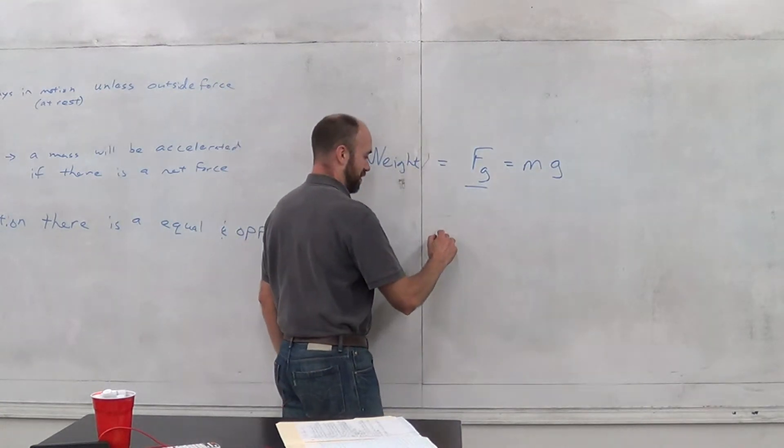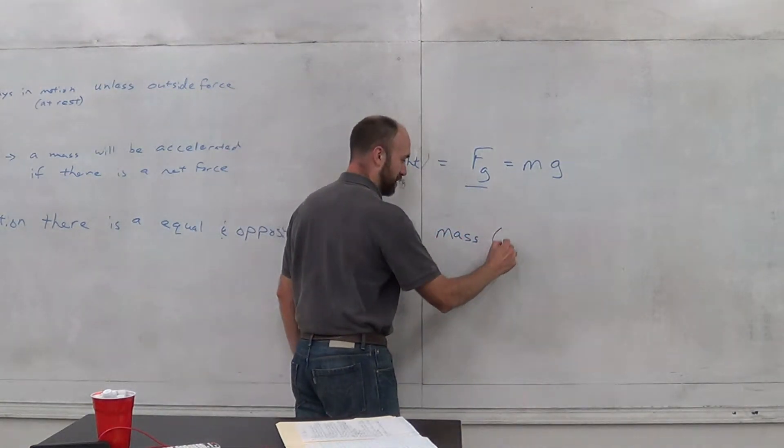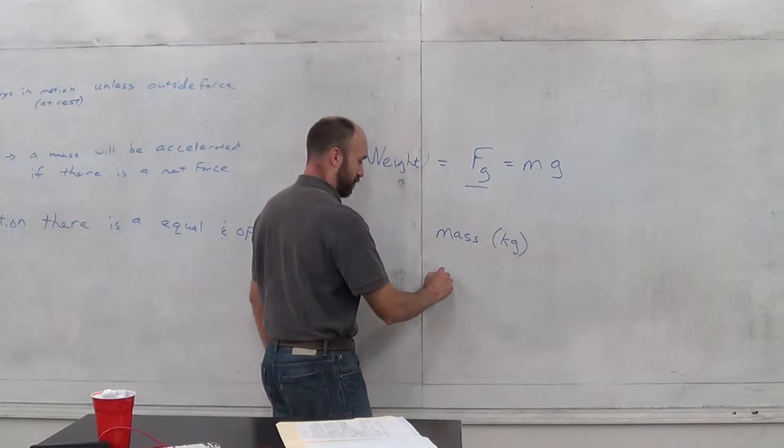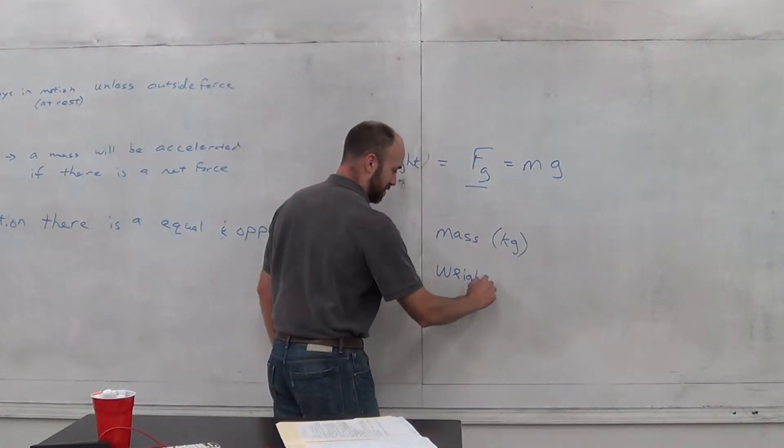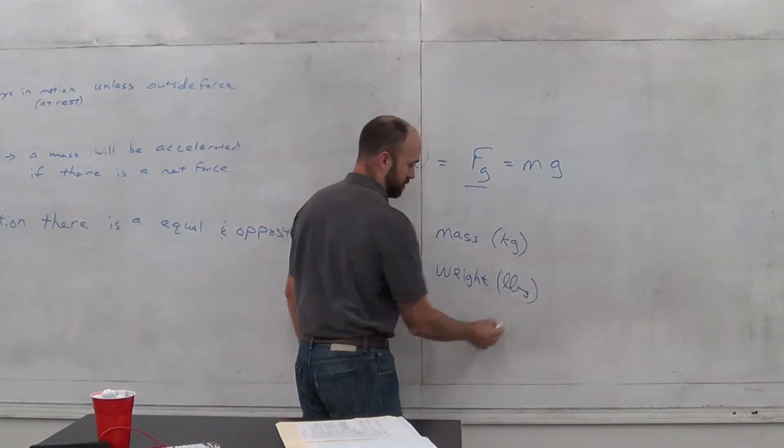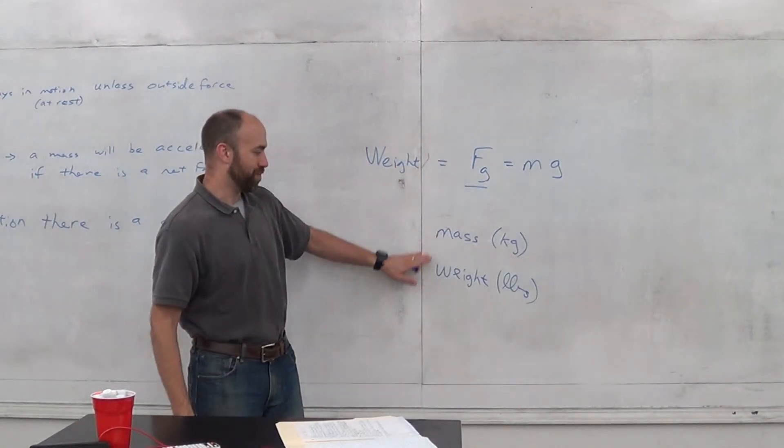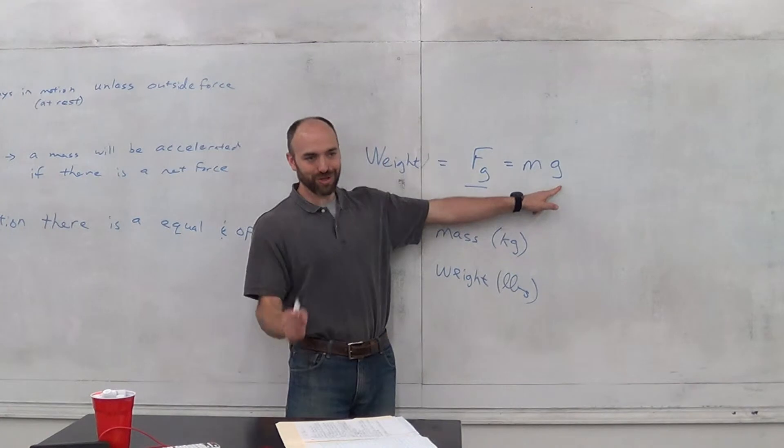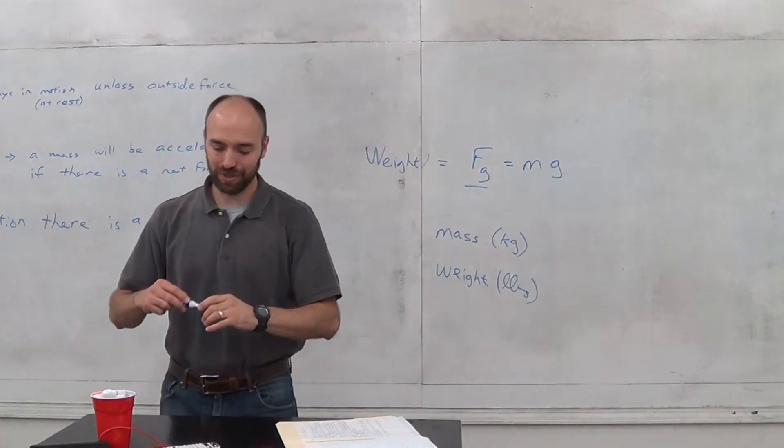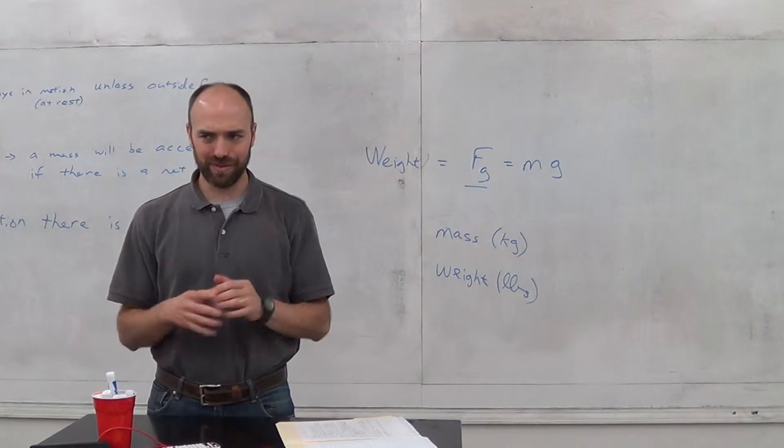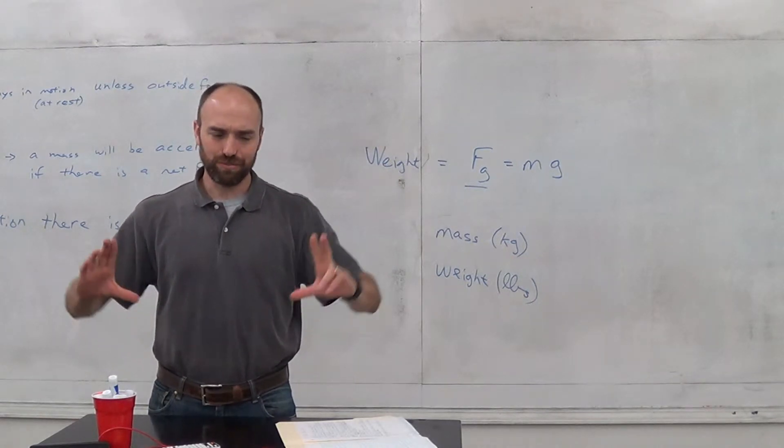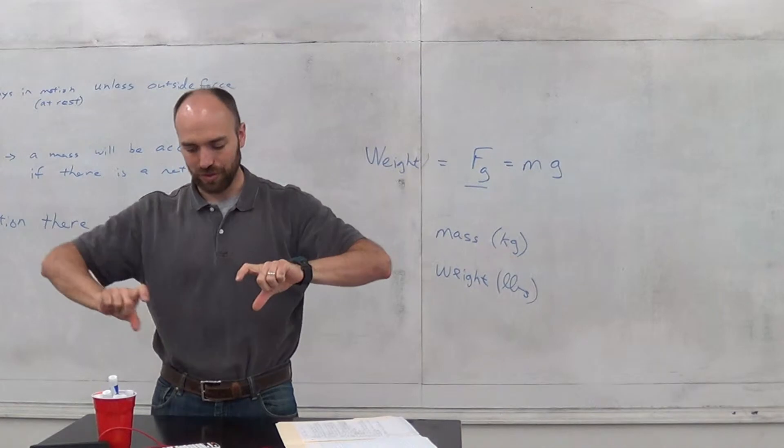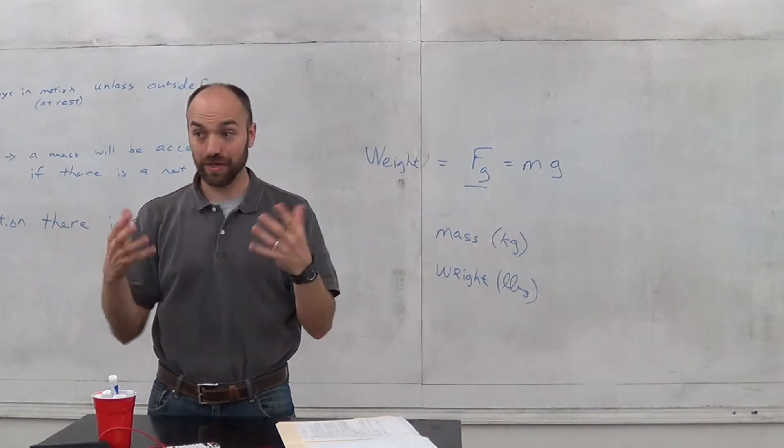This is why mass, which is measured in kilograms, is not the same thing as weight measured in pounds. They're not equivalent. You can't go from mass to weight. Now, if you multiply it times the acceleration rate on earth, then you can go there.